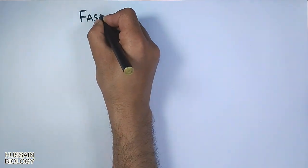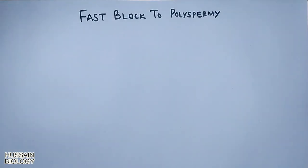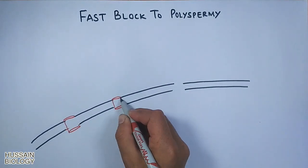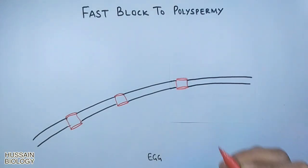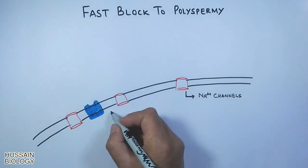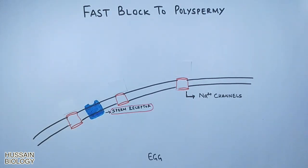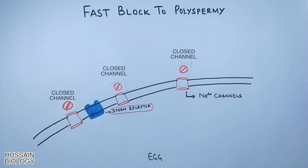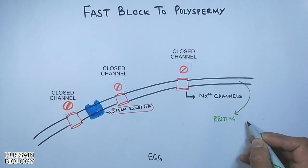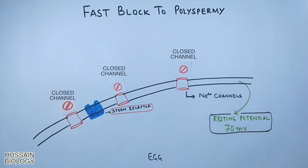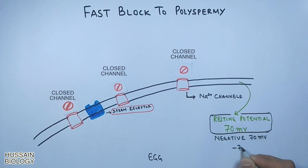First, let's look at the fast block to polyspermia. In this diagram we can see the egg cell membrane having sodium channels, and also embedded sperm receptors shown in blue. Prior to any sperm binding, the sodium channels are closed, and the resting potential of the unfertilized egg is minus 70 millivolts.